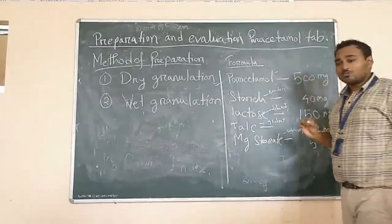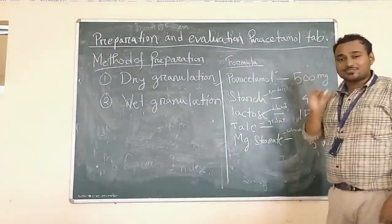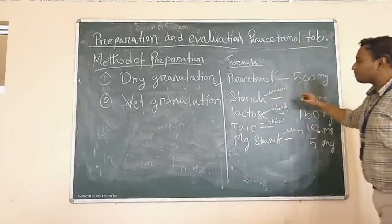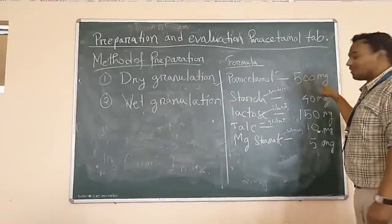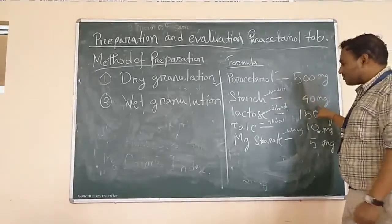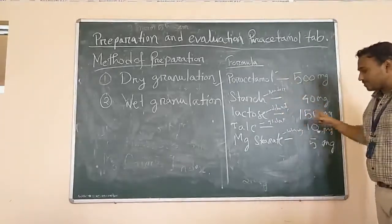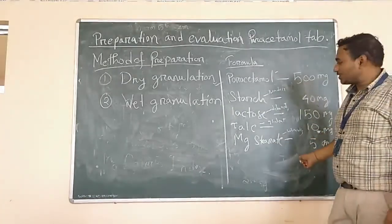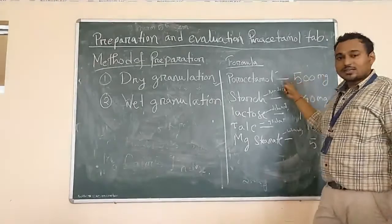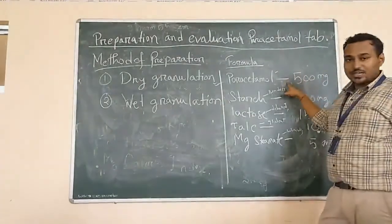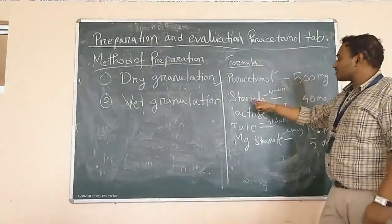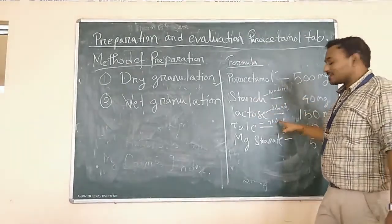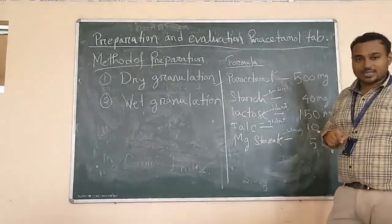For the formulation of paracetamol tablet, the formula is: paracetamol 500 mg, starch 40 mg, lactose 150 mg, talc 10 mg, and magnesium stearate 5 mg. Here, paracetamol is the active pharmaceutical ingredient, called API. Starch is a binder, lactose is a diluent, talc is a glidant, and magnesium stearate is a lubricating agent.